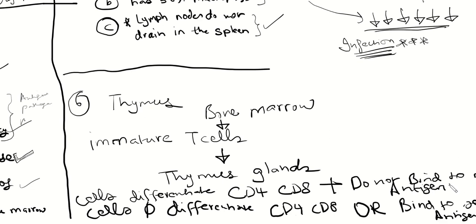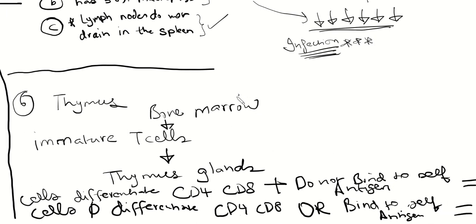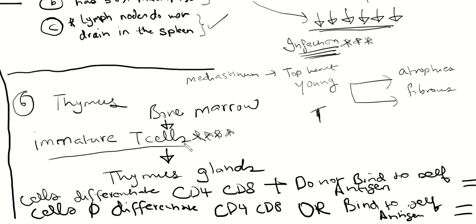The last organ is the thymus, covered briefly. The thymus is in the mediastinum, sitting on top of the heart. It's an organ that functions very well when we are young, but as we get older it atrophies and becomes fibrous, so it doesn't function as well. What it does is serve as the site where T cells go to mature.